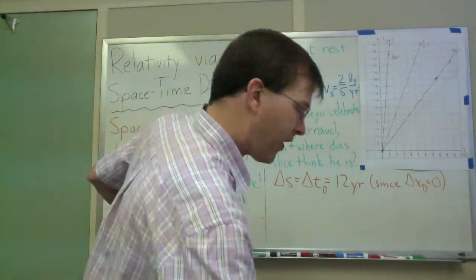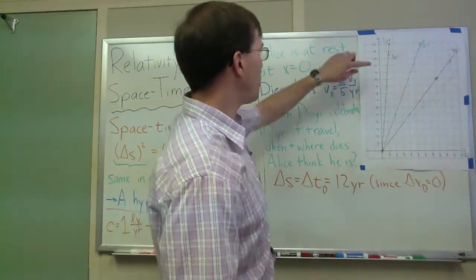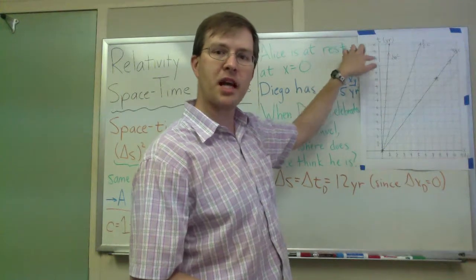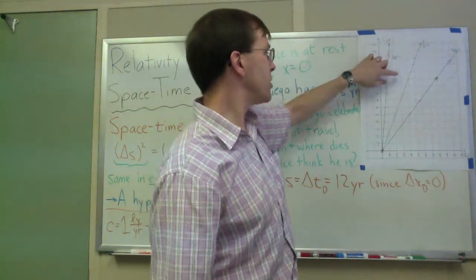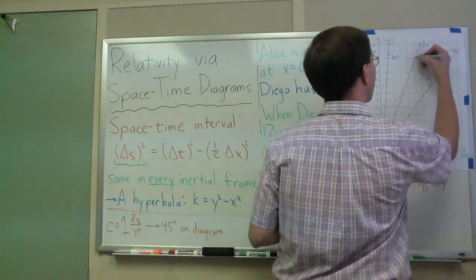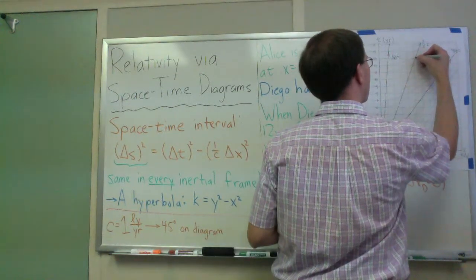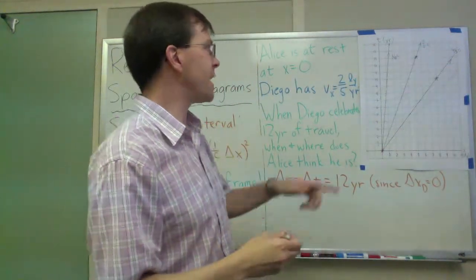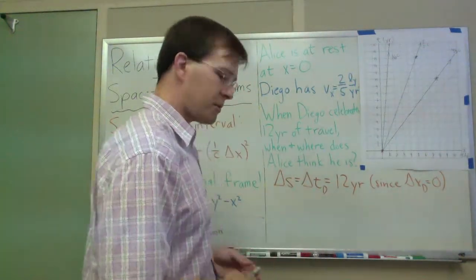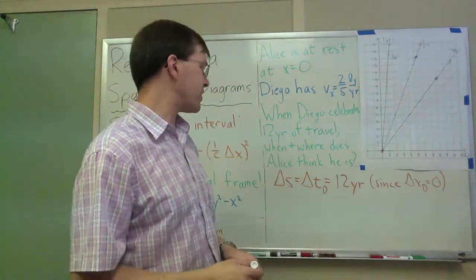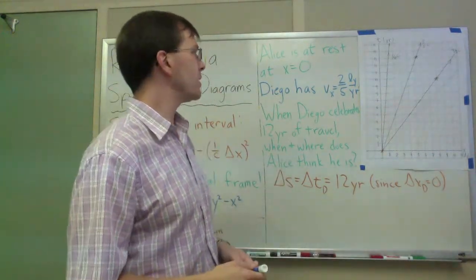And so the good news is I can find that directly on the graph. The twelve-year hyperbola is right here. Every line on that hyperbola has a spacetime interval of twelve years. So when is Diego touching that hyperbola? Well, looks like right about here is the point where Diego hits that hyperbola. So I'm supposed to be estimating now when and where does Alice think he is at that point.